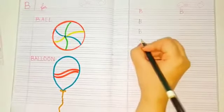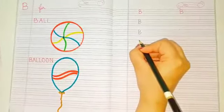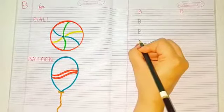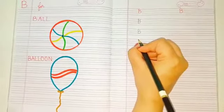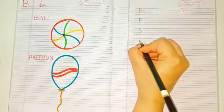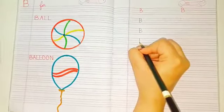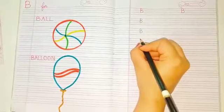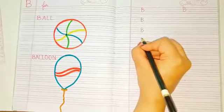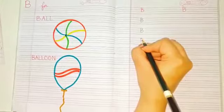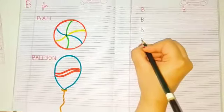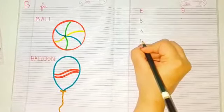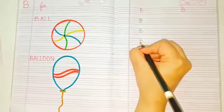Let's do that again. Again, B letter likhne ke liye hum top se start karenge aur top se ek standing line, third line tak banayenge. Yes, like this. Phir again hum top pe jayenge aur top se ek curve banayenge, middle tak. And yahi middle se ek aur curve banayenge, bottom tak. Yes.